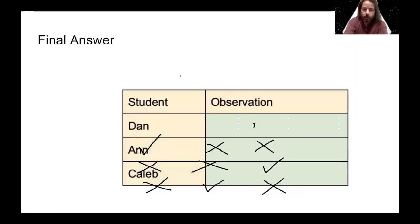We could say that Dan had the 5 meter observation, Caleb had the 10 meters and then Ann had the 10 seconds. Okay, so that is our final answer. And that's what we're going to be looking for.